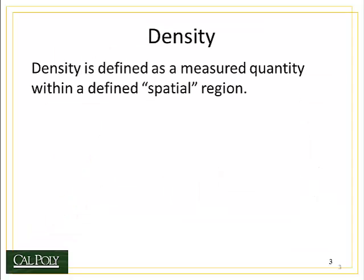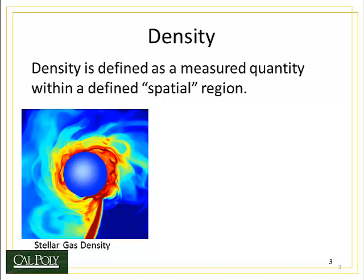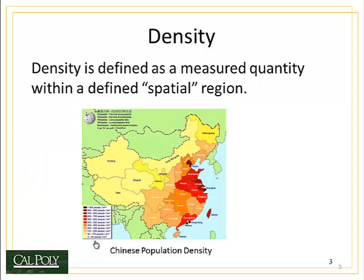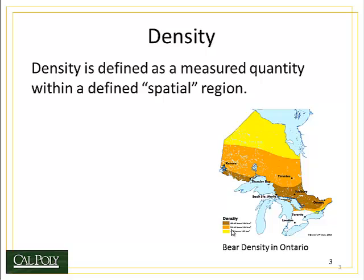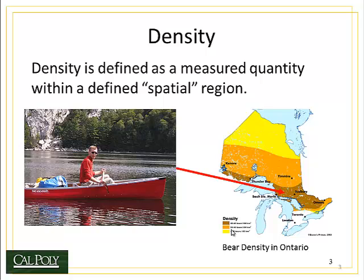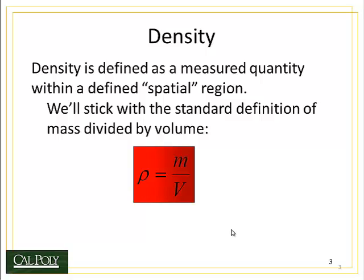Let's start with density. I'd like to start with properties first because it's something real that you can relate to. Density is defined as a measured quantity within a defined spatial region. For example, here's a picture of the stellar gas density around our sun — you can see how gases are ejected in high densities in the lower portion of the picture. Another example is population density in China, where most of the population is found around the coastline, with very low density in the interior. You can also look at bear density in Ontario, Canada — which happens to be important because I used to go canoeing there and ran into a few bears along the way. In materials engineering, we define density as the mass of material divided by the volume that mass occupies, or rho equals m over v.